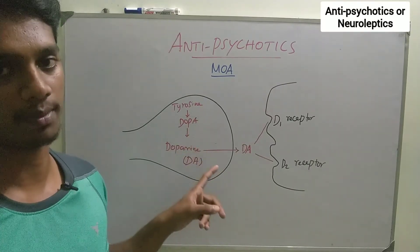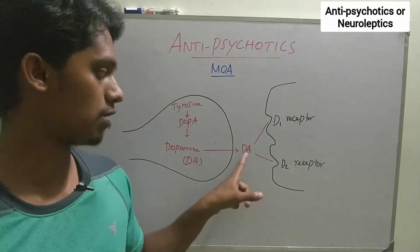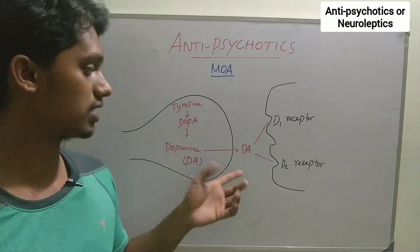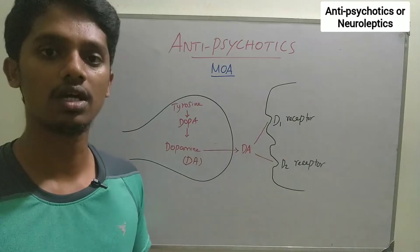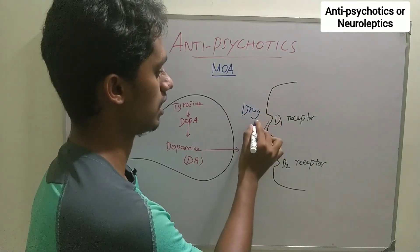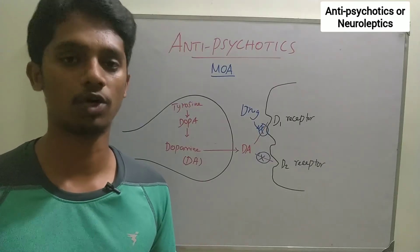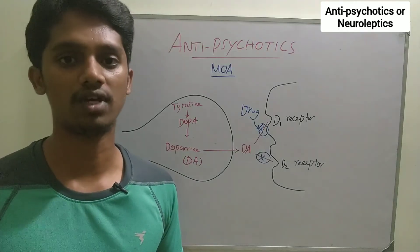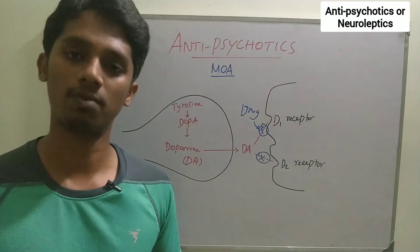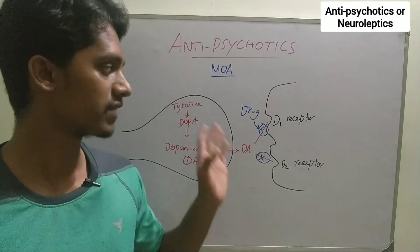Since dopamine is an excitatory neurotransmitter, if it binds to D1 or D2 receptors, brain activity increases. In first generation neuroleptics, the drug binds to the dopamine receptor and antagonizes it — blocking dopamine from binding. This reduces brain activity, and so psychosis is reduced. This is the mechanism of action of first-generation neuroleptics. In the second generation, dopamine is blocked, and sometimes serotonin is also blocked — there are multiple actions.